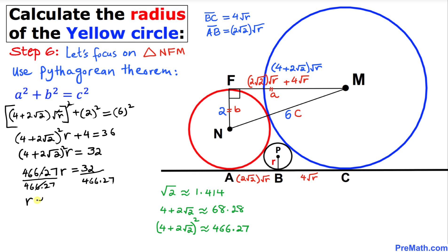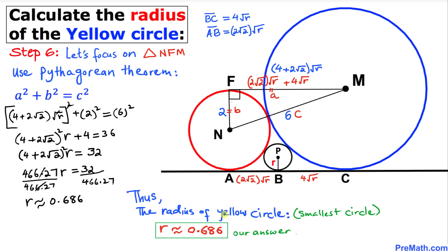Therefore r ≈ 0.686, and that is the radius of our yellow circle — the smallest circle. That is our final answer. Thanks for watching, and please don't forget to subscribe to my channel for more exciting videos!